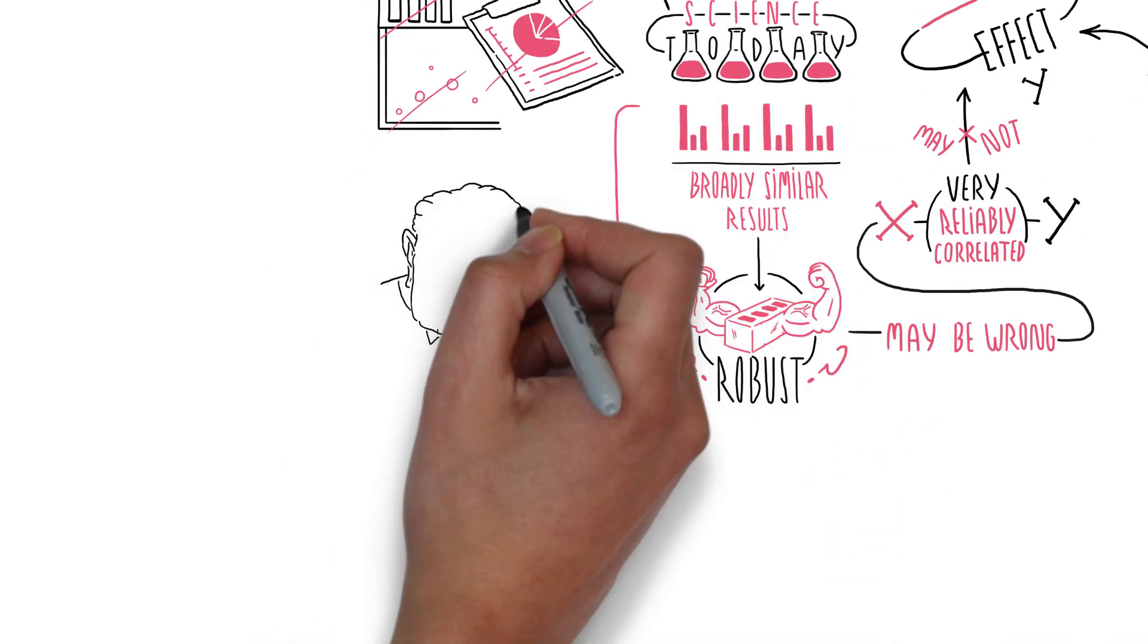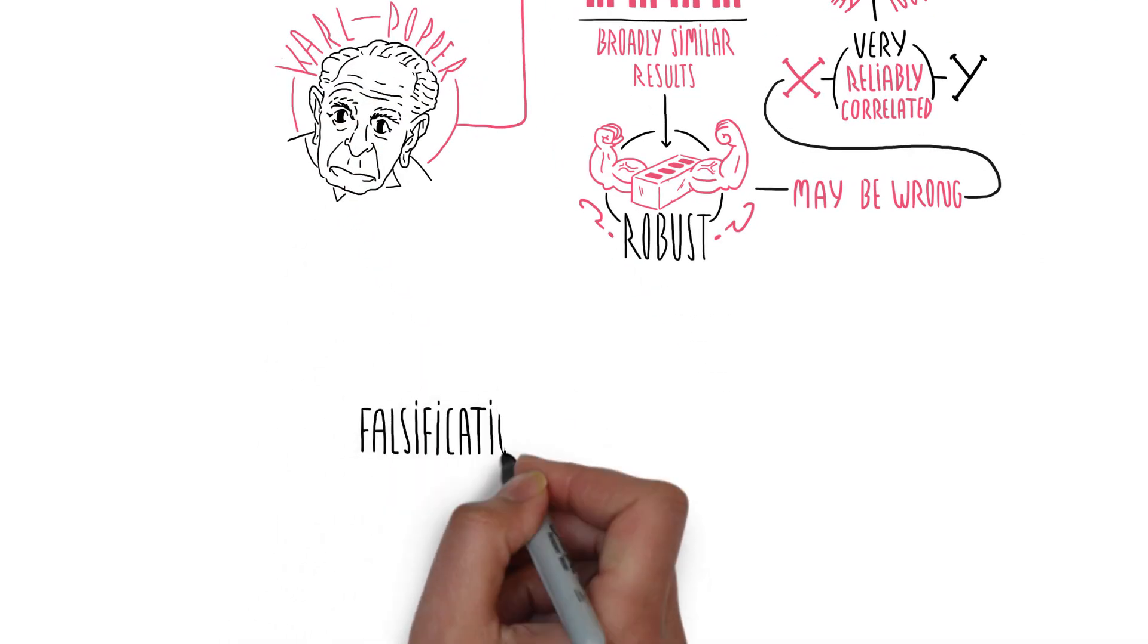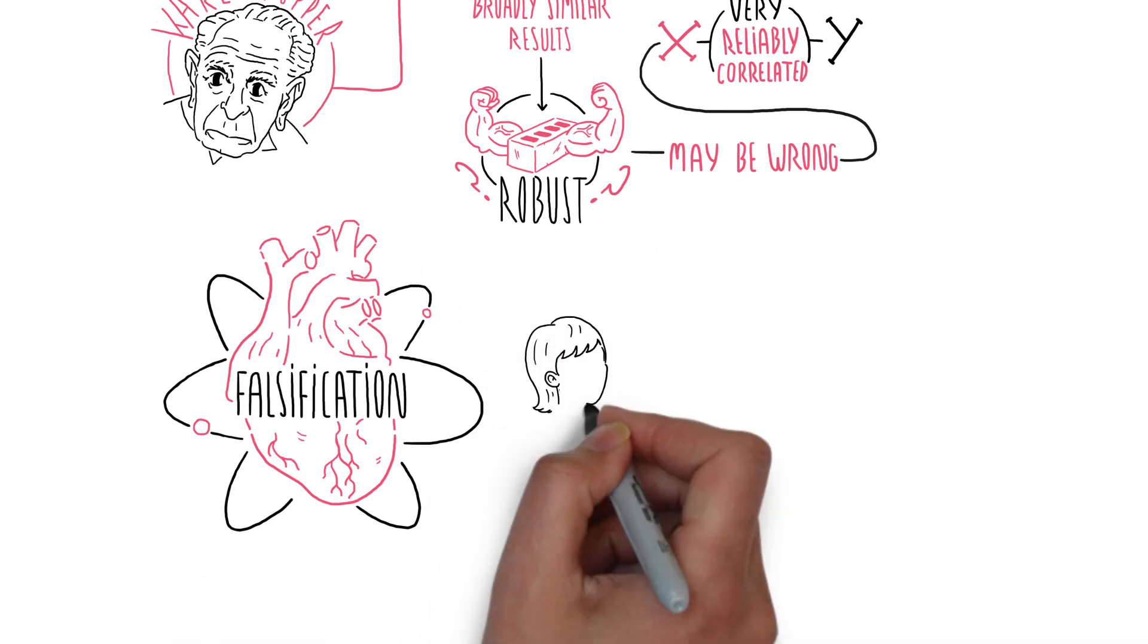This focus on replication stems from the idea, championed by the philosopher of science Karl Popper, that falsification is at the heart of the scientific enterprise. In fact, this is rarely how scientists work in practice.